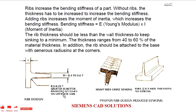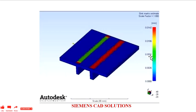The radius of the corner should be 0.25 times the thickness. If we have a larger radius, it will have less sink effect. Because of more material at the bottom, it causes a sink mark. So the rib thickness should be greater than or equal to 0.5 of the wall thickness to avoid the sink mark.